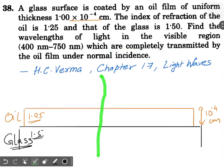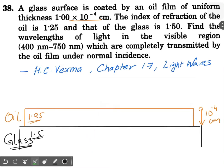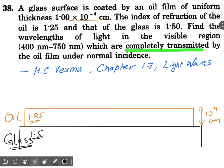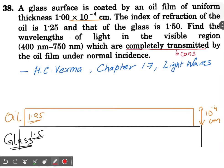Let's understand something first. Light is falling vertically downwards. After transmitting through the two layers of medium, the light will undergo interference due to partial reflection. Some part of light goes straight through while some part gets reflected and comes back down, interfering with the original wave. The interference might be constructive or destructive. The statement 'completely transmitted' means we are asking about wavelengths which have undergone constructive interference.